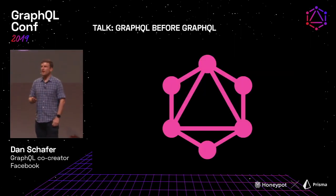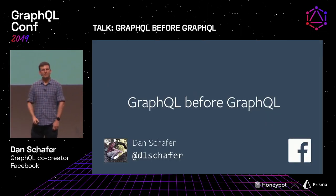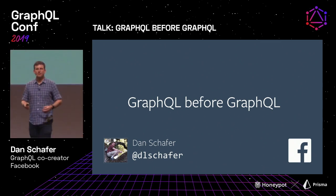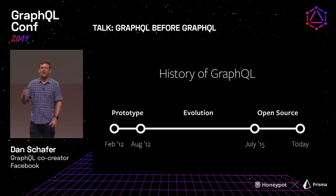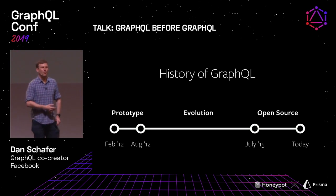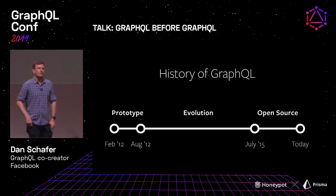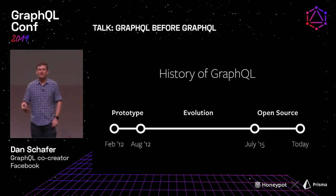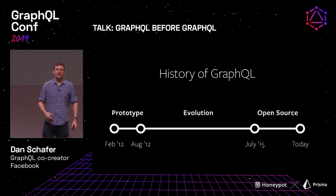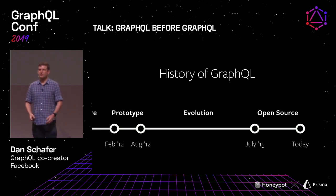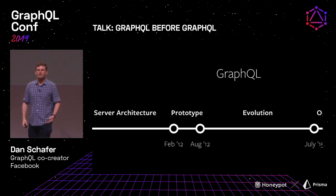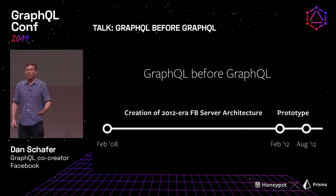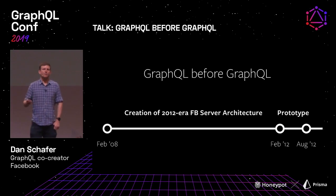What I'd like to talk about today is what GraphQL was before GraphQL, because at this point the story of GraphQL — the initial prototype in February of 2012, hacking in the corner, shipping it in the iOS app in August, the open sourcing in July of 2015 — we've told it a bunch of times. The story we haven't told quite as much is that prehistory.